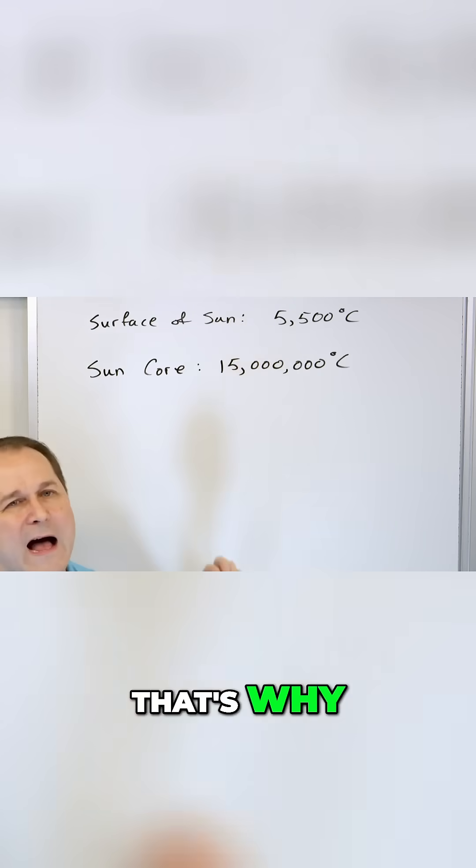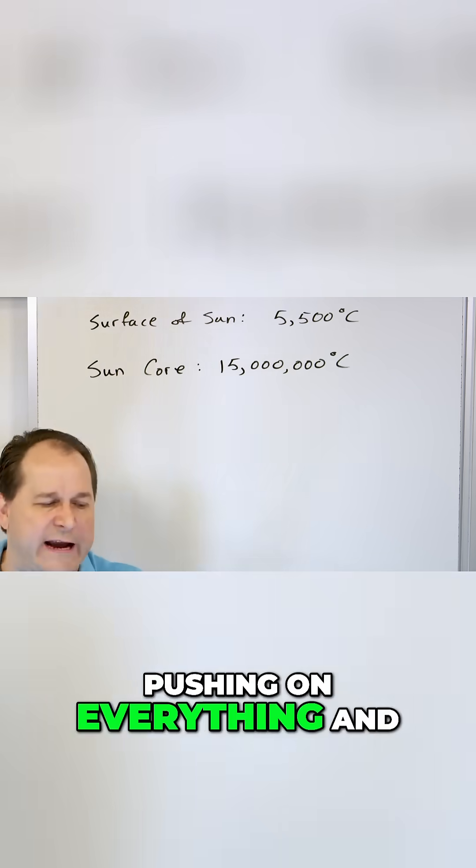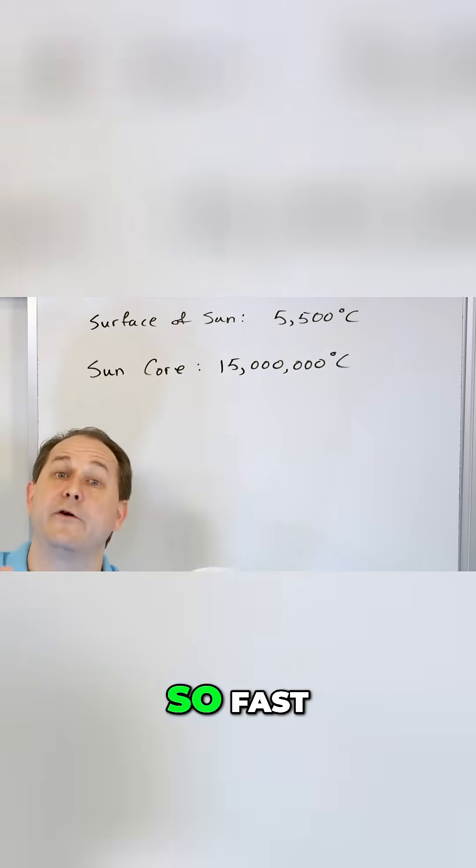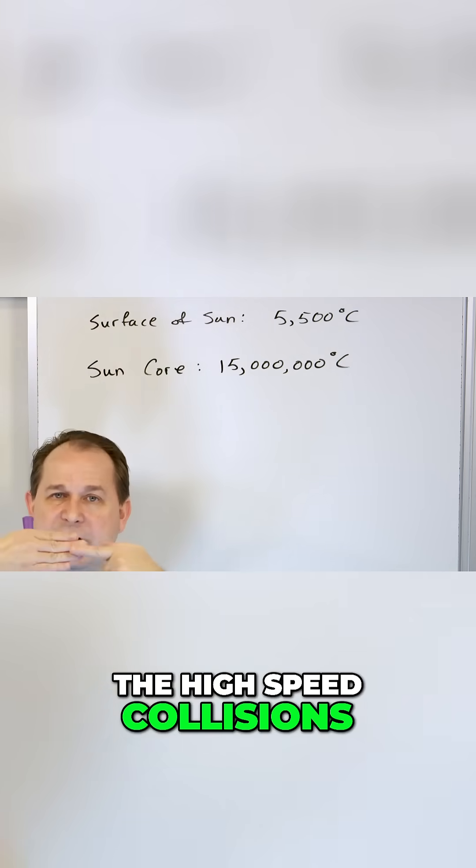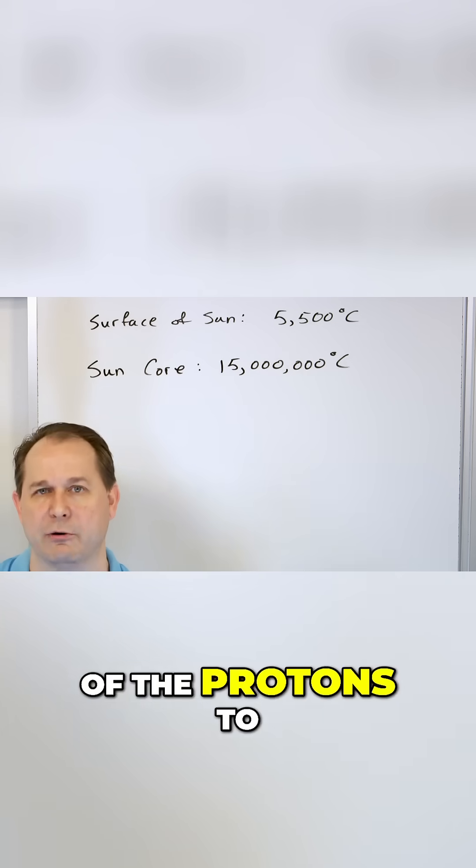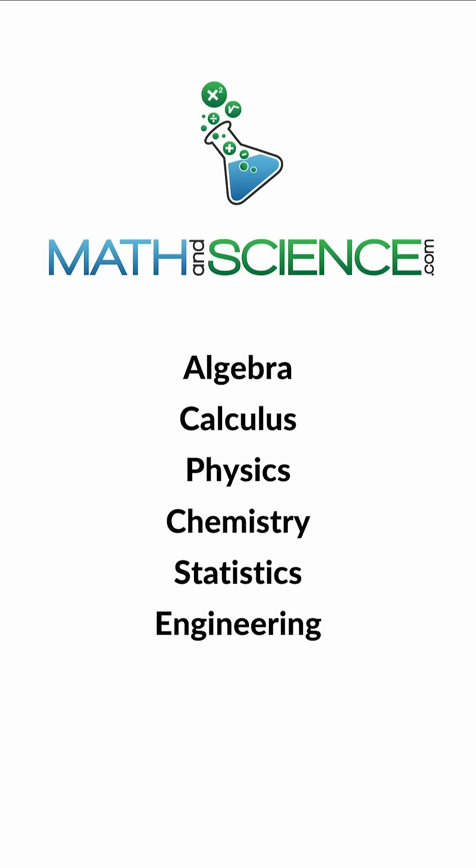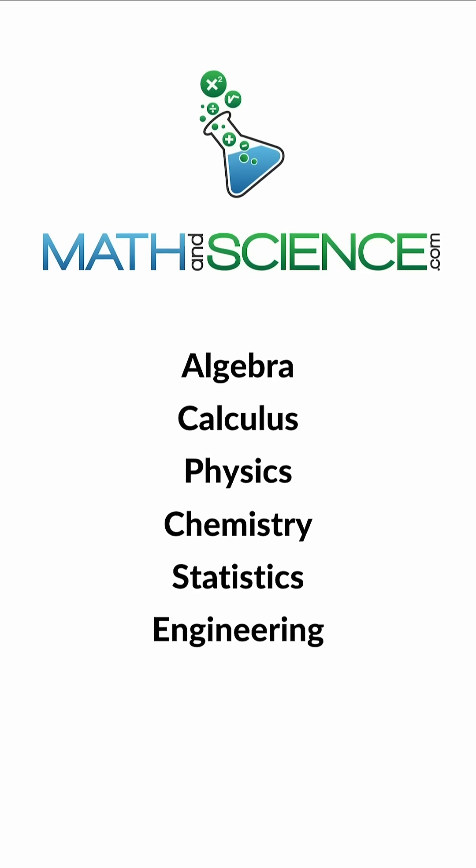So 15 million degrees, that's why you have so much temperature there - because the gravity is pushing on everything and causing everything to move so fast. The high speed collisions that are happening there are overcoming the repulsion of the protons to fuse and form helium nuclei and so on. Learn anything at mathandscience.com.